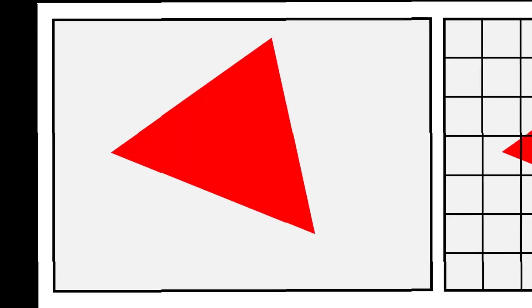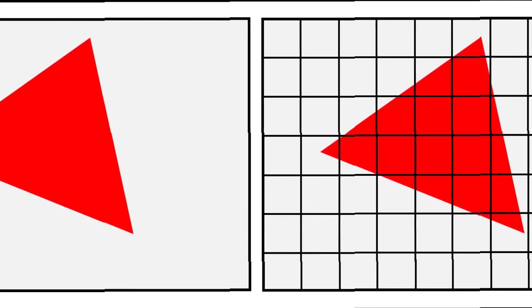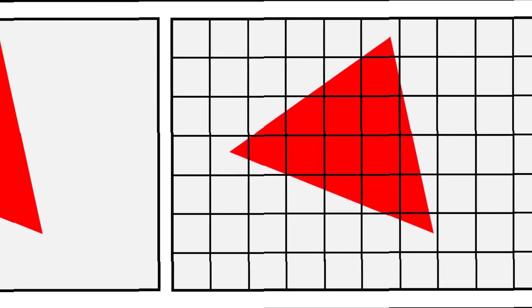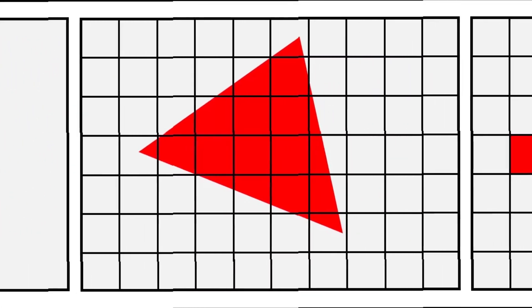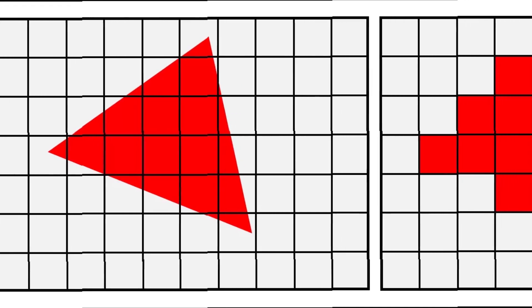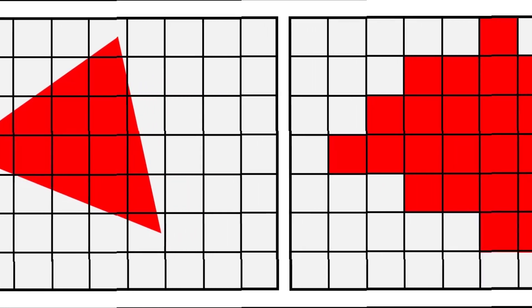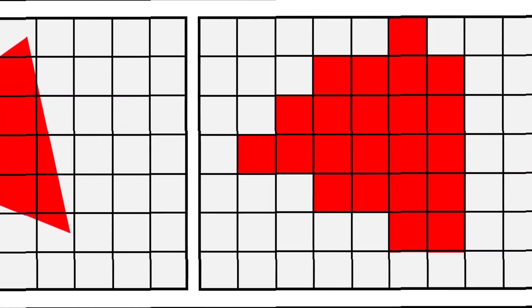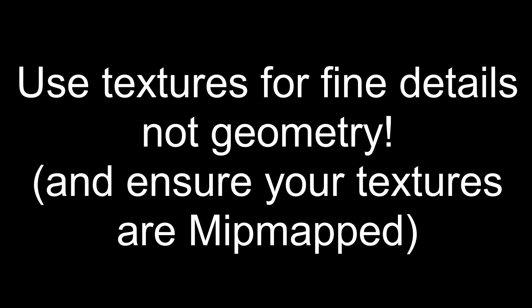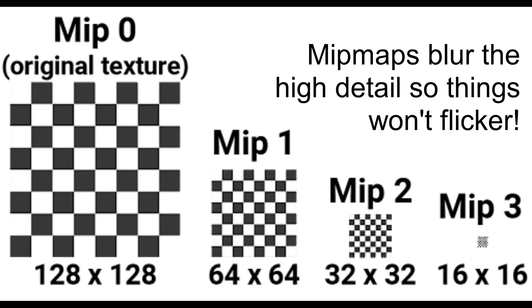Another issue is the resolution of VR displays. It's not bad, but in practice, if the world has detailed geometry, you'll find that it all looks horribly flickery. This is because of aliasing. But luckily there's a fantastic solution — details drawn in a texture with a mip map are fine.